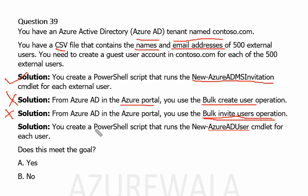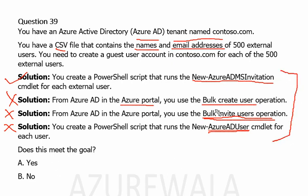For solution four, you create a PowerShell script that runs the New-AzureADUser cmdlet — but that is again limited to Active Directory internal users, not external users, therefore this solution will also not work. Over the internet you will find this question with different solutions, and I have compiled all of them together so it will be helpful to remember each option that may appear in the exam.